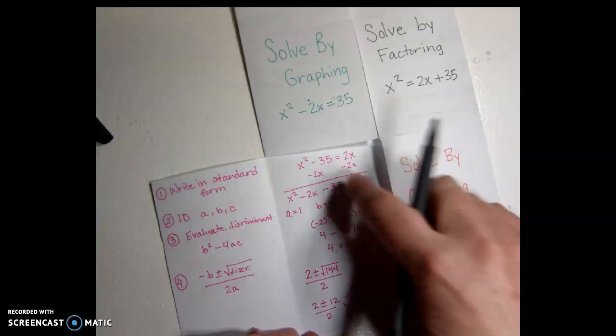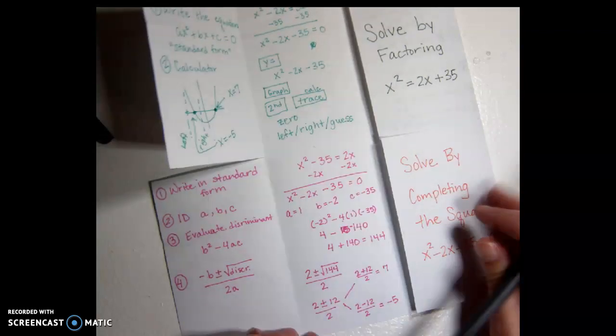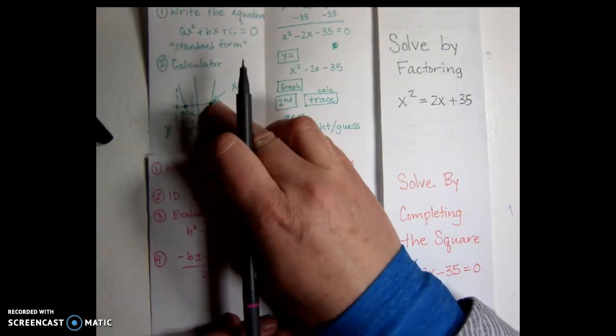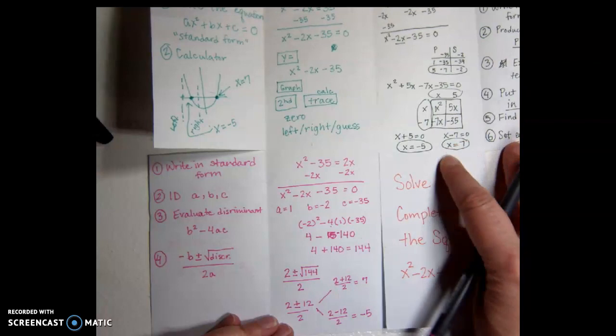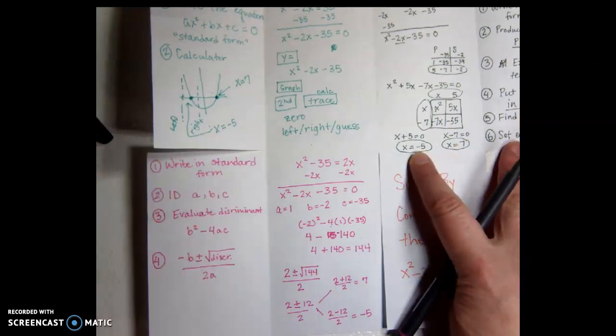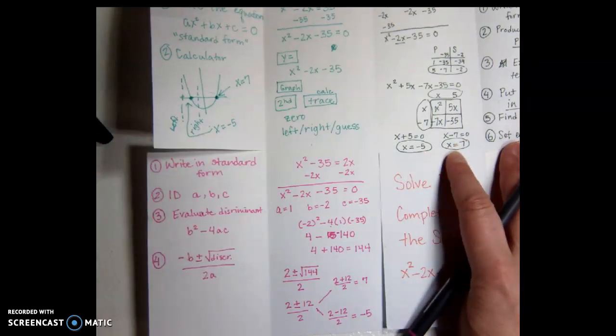And the comforting thing is that those are the same answers that we got when we solved by graphing. We found our x-intercepts were negative 5 and 7, and that was the same answer we got when we solved by factoring. Eventually, we got that x was equal to negative 5, or x was equal to 7.